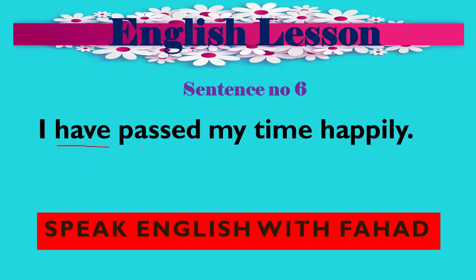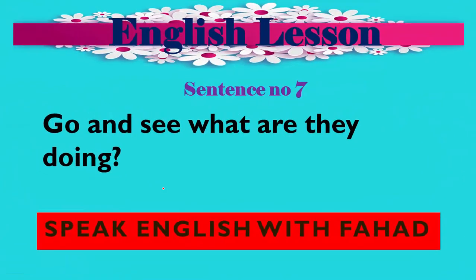Sentence number 6: 'I have spent my time happily.' Here the third form of the verb is used. Because 'have' is present, this is present perfect tense. If we change 'have' to 'had', it becomes past perfect. And if we say 'I will have spent my time happily', it becomes future perfect.